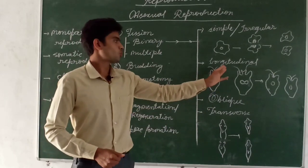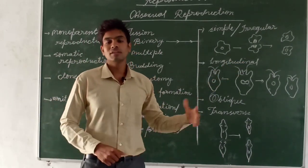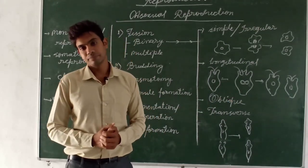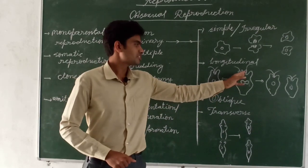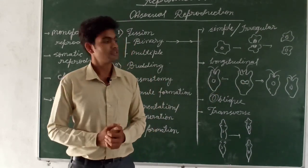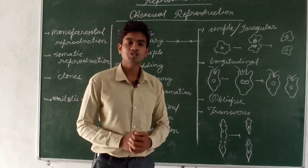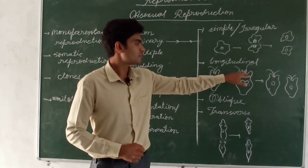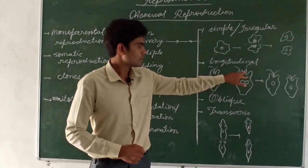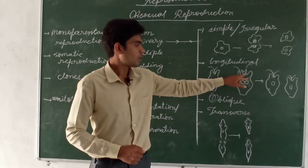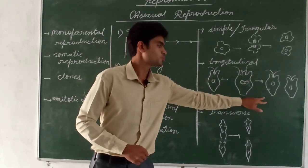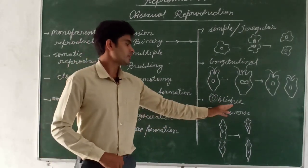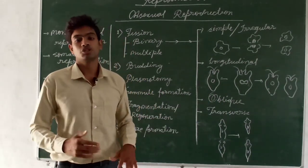In longitudinal binary fission, the cytoplasm divides longitudinally and the division starts from the flagellar end. The example is euglena. As you can see, first a longitudinal furrow is created, and that furrow ultimately separates a single euglena into two separate daughter euglena cells.